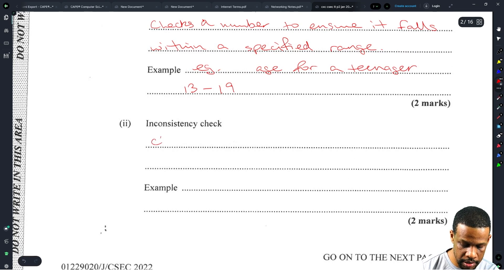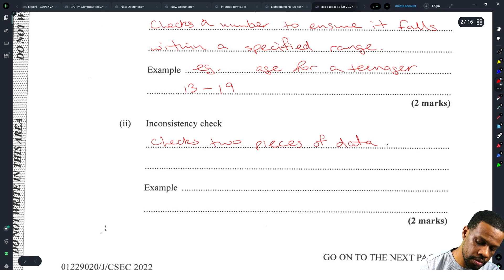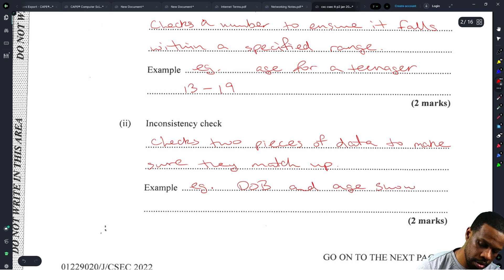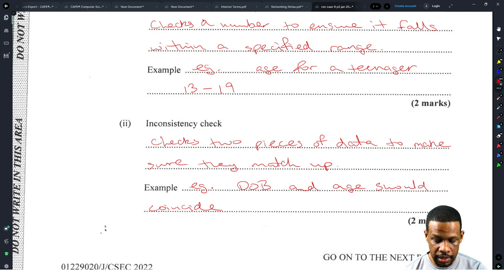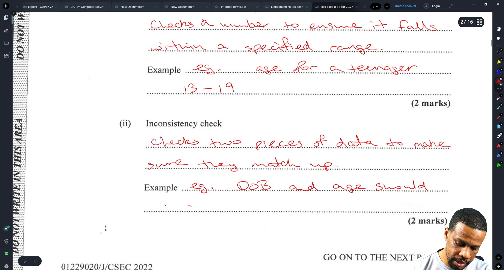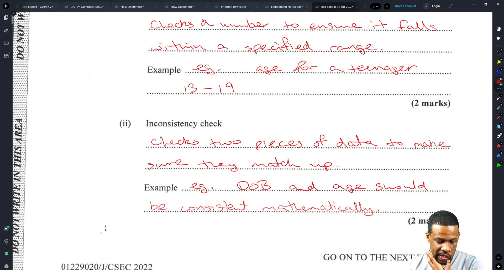Inconsistency check would be checks two pieces of data to make sure they match up. Example: date of birth and age should coincide. They should be consistent mathematically. That's two inconsistency check. Do we have our next one? Nope. Well look at that, easy marks there.